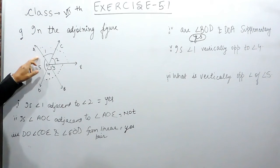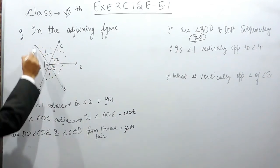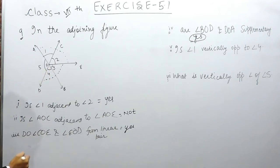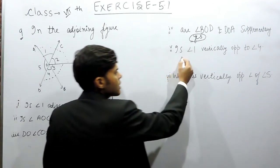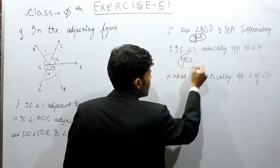Now we have to tell, is angle 1 vertically opposite to angle 2? Now these two lines are intersecting at this common point O and these two angles are opposite to each other. Yes, they are vertically opposite to each other.